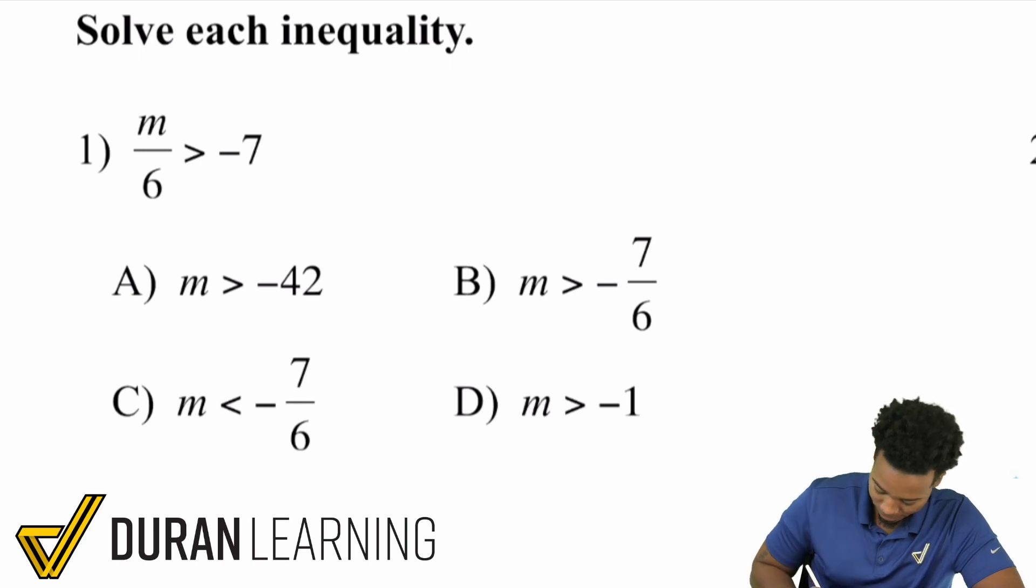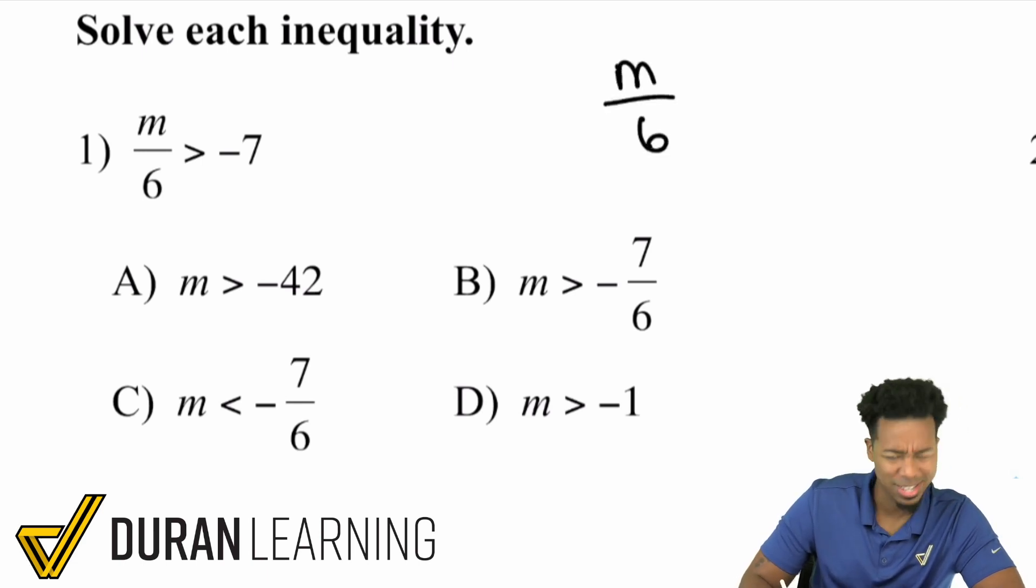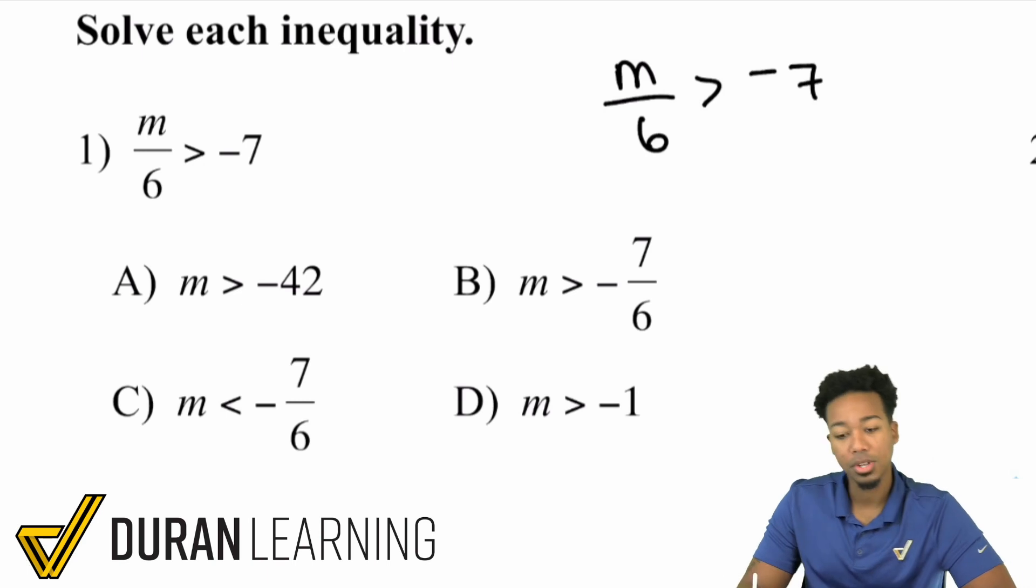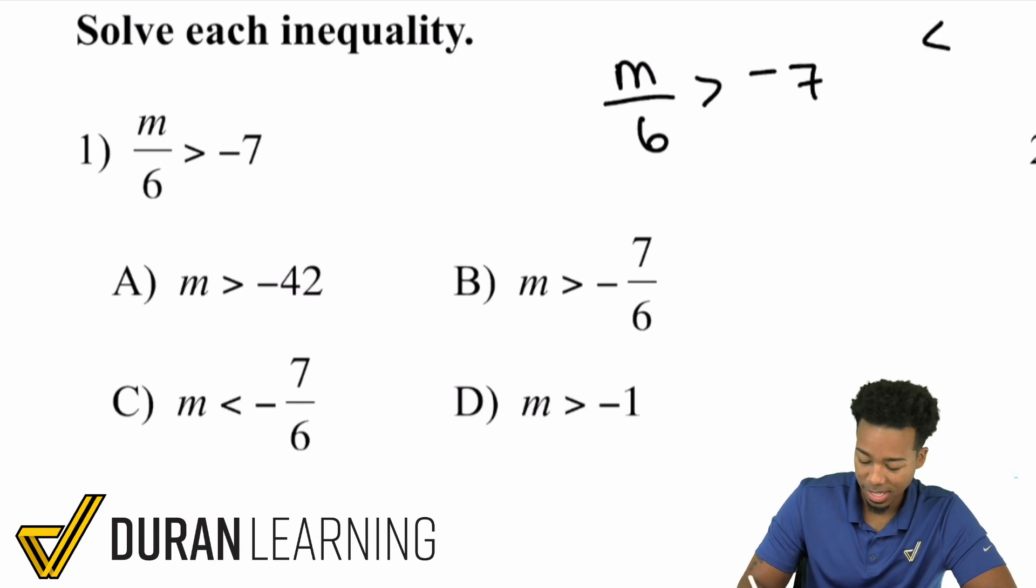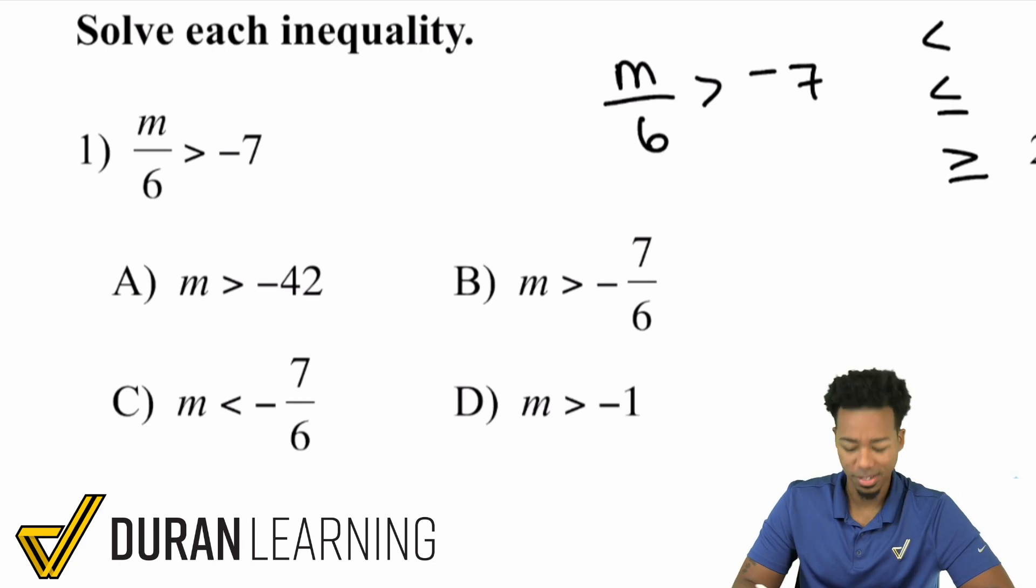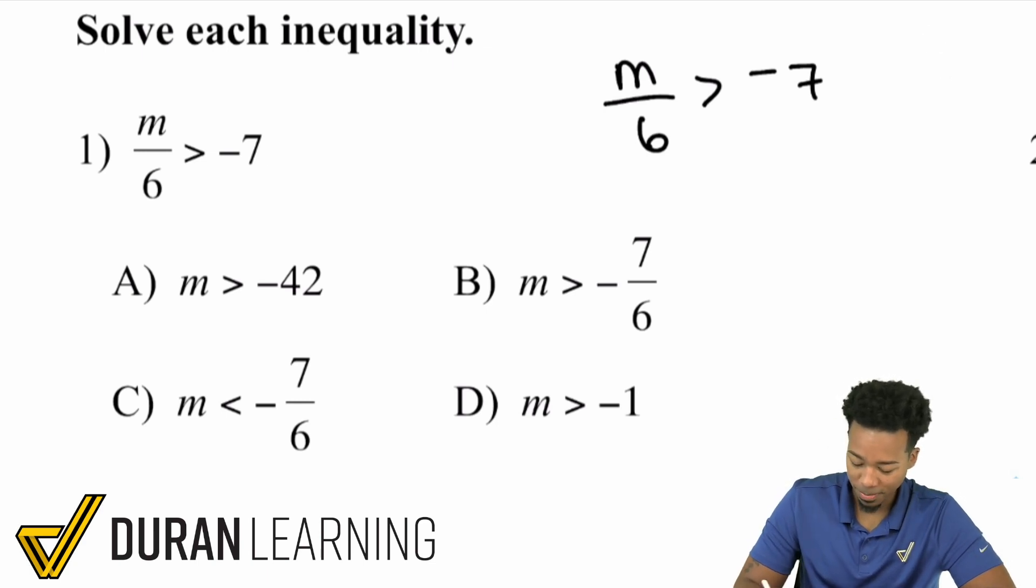We have m divided by six greater than negative seven. Now notice what I just said. I said equals negative seven? No, greater than negative seven. And so treat this just like an equation. That inequality symbol just means greater than, then we have less than, we have less than or equal to, greater than or equal to. Those all mean different things. And so let's go ahead and get through right here. We have m over six is greater than negative seven.